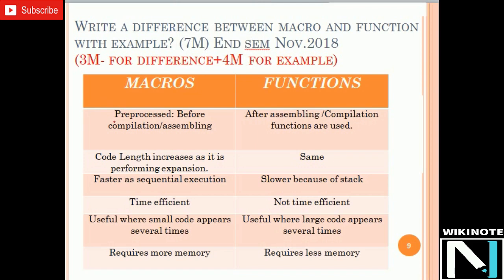First: macros are pre-processed. Before assembling or compilation, macros are processed and you get a program that is macro-free. But functions are processed after assembling or after compilation — before assembling or compilation, functions are not available to the user. So the basic difference is: macros are pre-processed and functions are post-processed.